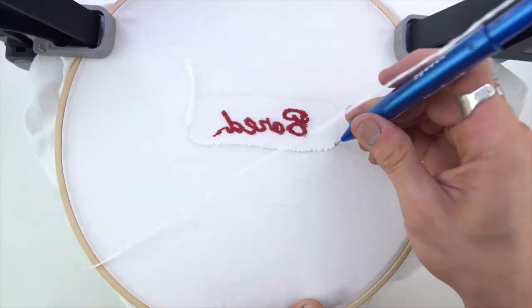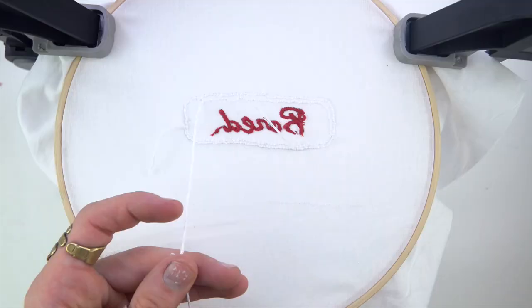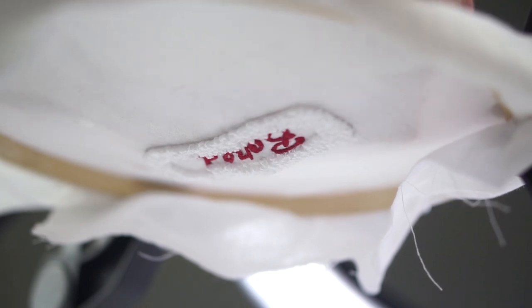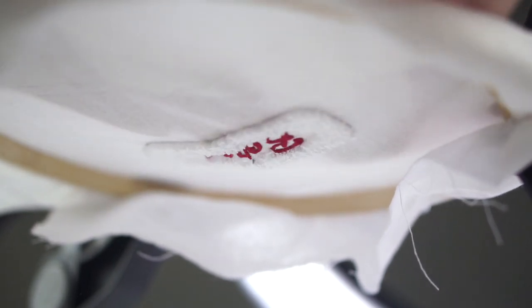So I flipped it around and from the back, we're going to start with the punch needle. That way the loopy side is on the front. So I just went ahead and went all the way around. There's a shot from the bottom.